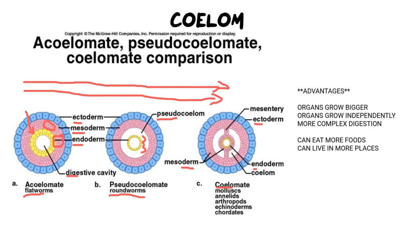The advantages of having a coelom are significant. Organs slowly get bigger, and as they get bigger the organism gets bigger, allowing more complex reactions to take place. Organs grow independently of one another — the heart can grow separately from the lungs; they can repair themselves independently. We can also have more complex digestion, meaning a bigger range of foods can be eaten. If one food is missing, you can find something similar and still get the same nutritional value. Being able to eat more foods also means you can live in more places, making you adapted to more environments and much more successful.